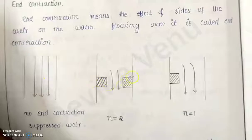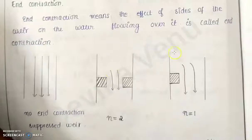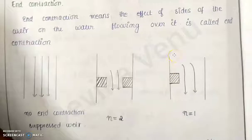In the second case, there are two ends, and the discharge is less than the first case — the flow is disturbed. The effect of the sides has to be taken into account to find out the discharge for this particular case. In the third case, there is only one side for the weir, so the flow is disturbed again, but the discharge is not as low as the two-end case.